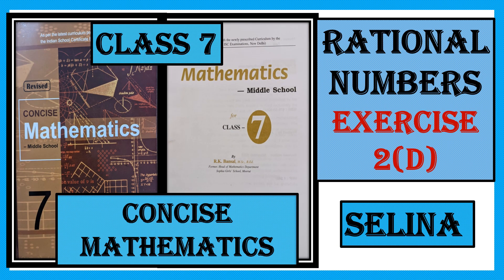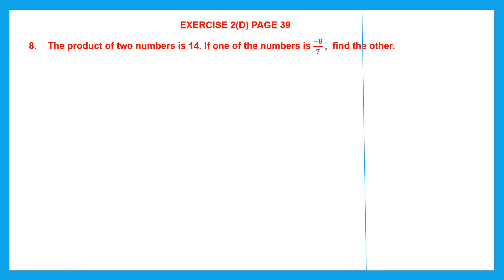Hello students, let's do rational numbers exercise 2D. This is on page number 39 and we are with question 8. The product of two numbers is 14. If one of the numbers is minus 8 by 7, find the other.